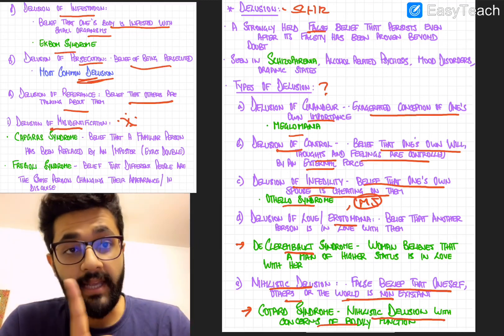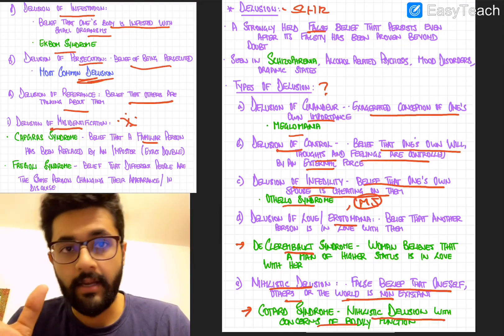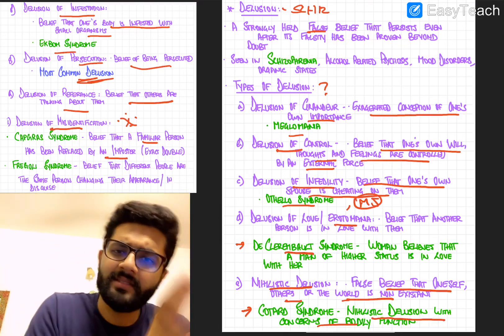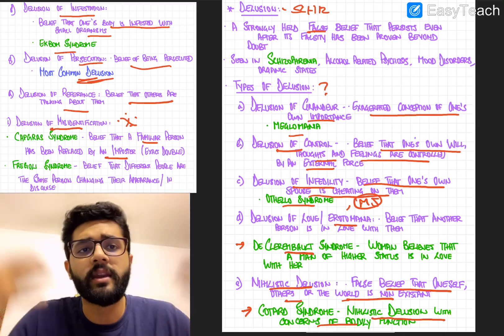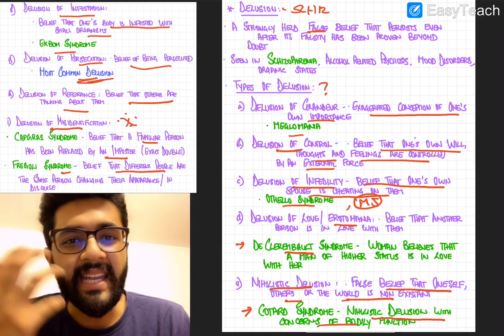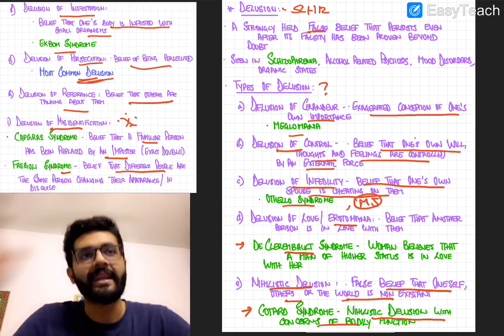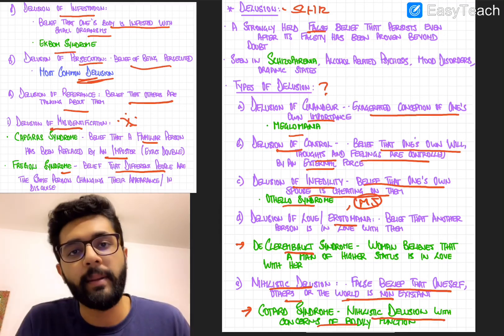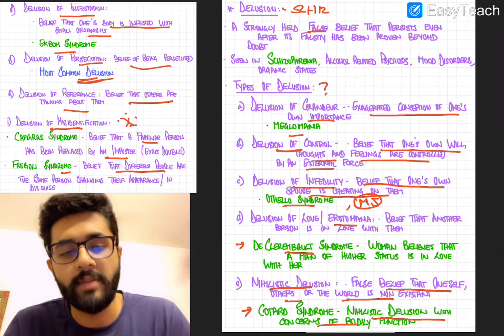So Capgras syndrome is a belief that a familiar person, someone you know well has been replaced by an imposter or an exact double or a body double. So someone you know well has been replaced by an imposter. And Fregoli syndrome is a belief that different people are the same person constantly changing their appearance. So if there's 10 people, they believe that all 10 people are just one person who's constantly changing his appearance, voice, behavior, whatnot.